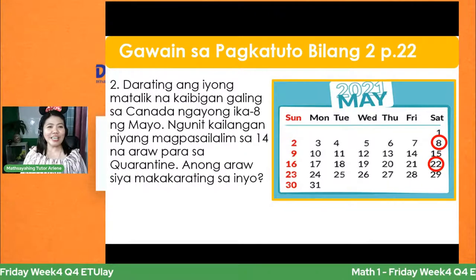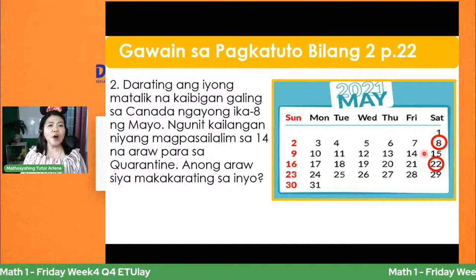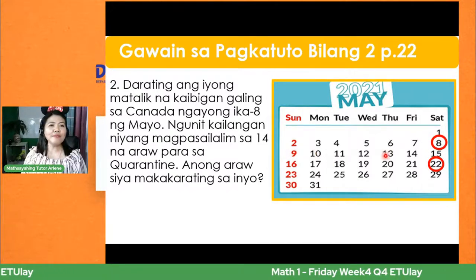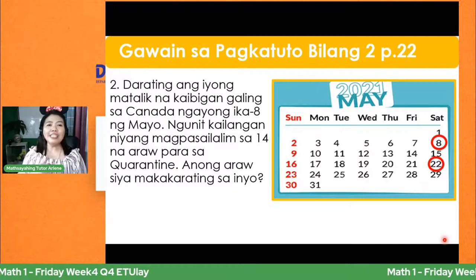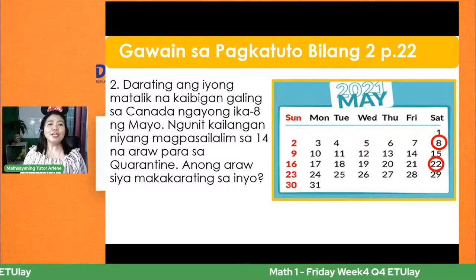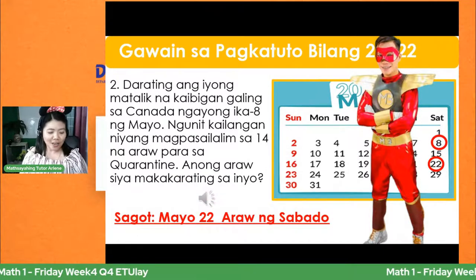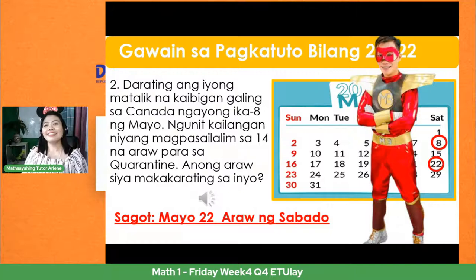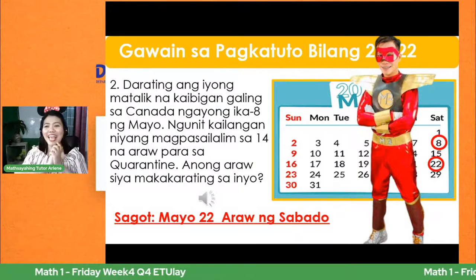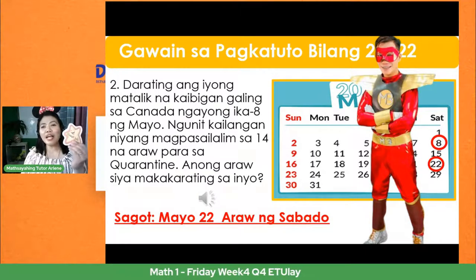Kung 14 days, bilangin natin. 8 siya dumating — bibilang tayo ng 14. Ibig sabihin, 8 plus 14. Bilang tayo: 1, 2, 3, 4, 5, 6, 7, 8, 9, 10, 11, 12, 13, 14 — at ang ika-14th day mula nang siyang dumating ay Mayo 22. Ang tamang sagot ni Matrimatika ay Mayo 22, araw ito ng Sabado. Ang galing ni Chrisanne, ni Violeta — tama kayo mga anak.